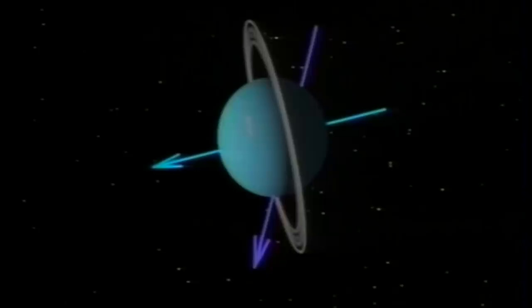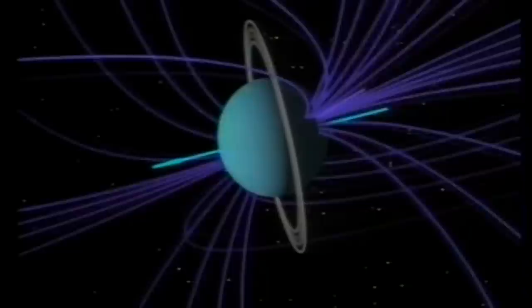La flèche mobile montre l'inclinaison étrange du champ magnétique d'Uranus. Par rapport à son axe de rotation, son axe magnétique est décalé de 60 degrés.